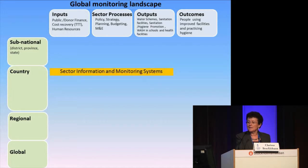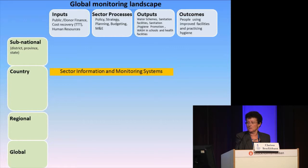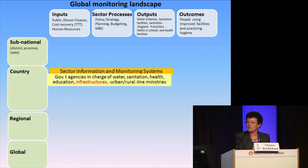The most important part of this matrix is the sector information and monitoring systems, which look at inputs, sector processes, and outputs — that's the foundation on which it's all built. That, of course, is done by government agencies in charge of water, sanitation, health, education, infrastructure, by urban and rural line ministries.